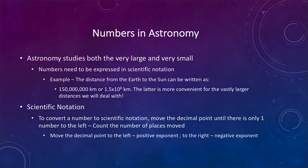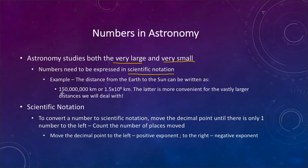One of the difficulties with numbers in astronomy is that we deal with both very large and very small numbers. Because of that, we express those numbers in what we call scientific notation in order to make them easier to write out. For example, the distance from the earth to the sun can be written as 150 million kilometers — a very big number with lots of zeros to write out and keep track of. So we can write that as 1.5 times 10 to the 8th kilometer, which is really convenient for the incredibly large distances we deal with.